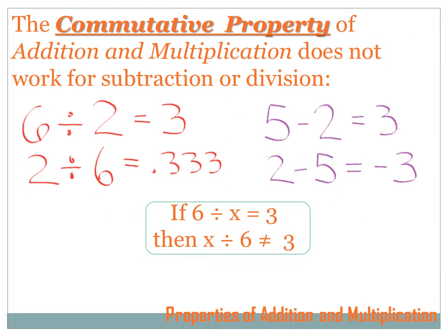The commutative property of addition and multiplication does not work for subtraction or division. 6 divided by 2 equals 3, but 2 divided by 6 doesn't equal 3 — it equals 0.333... Also, 5 minus 2 equals 3, but if that 5 and the 2 commute, then 2 minus 5 doesn't equal 3, it equals minus 3.